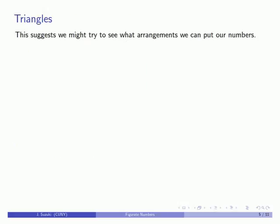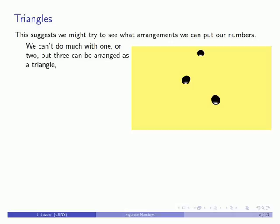And so this suggests that one of the things we might do is to see how we can arrange a collection of units. Now, there's not a whole lot we can do with one unit, and not a lot more that we can do with two units. But if I have three units, I can arrange them as a triangle, or maybe a slightly different triangle, or maybe yet another triangle.